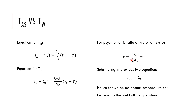For water-air systems, we know the psychrometric ratio h_c / (k_y C_s) equals 1. If you substitute this into the equations, you will find that the adiabatic saturation temperature is the same as the wet bulb temperature. This kind of makes sense because the wet bulb temperature has similar principles. So for now, remember: for water-air systems, the adiabatic saturation temperature and the wet bulb temperature are the same value.